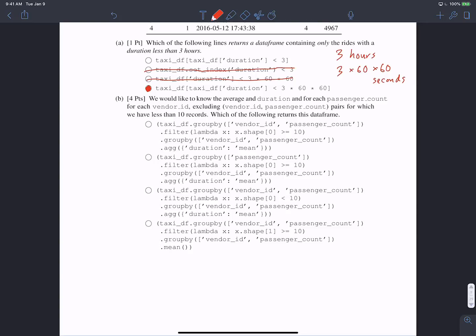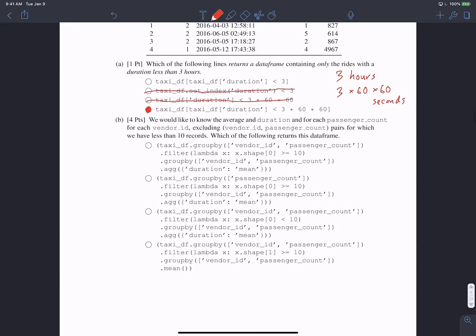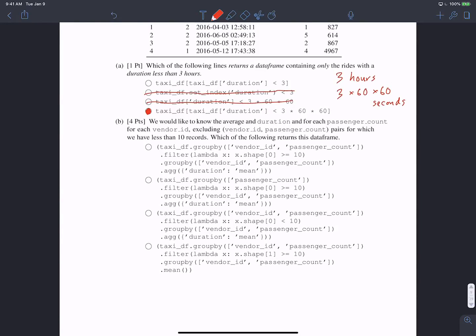Now for the last part of the pandas section, we would like to know the average duration for each passenger count and for each vendor ID, excluding the vendor ID passenger count pairs for which there are less than 10 records. We want to determine which of the following sets of code return this data frame. Right off the bat, we can get rid of option three because when it filters, it only keeps the pairs that have less than 10 records, whereas we want to be keeping the ones with 10 or more records. We can also get rid of the second option because it only groups by passenger count, but we want to group by vendor ID and passenger count.